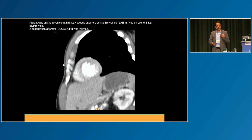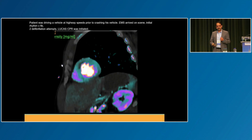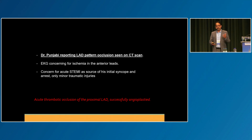All you need to do is pay really close attention to iodine maps. Here's a patient who was in a high-speed MVC. By the time the medics got to him, he was in VF arrest. You look at the CT scan and see a perfusion defect in the anterior wall. This completely changes the trajectory of this patient — the motor vehicle accident was because of the MI. He went to the cath lab and got his LAD fixed.